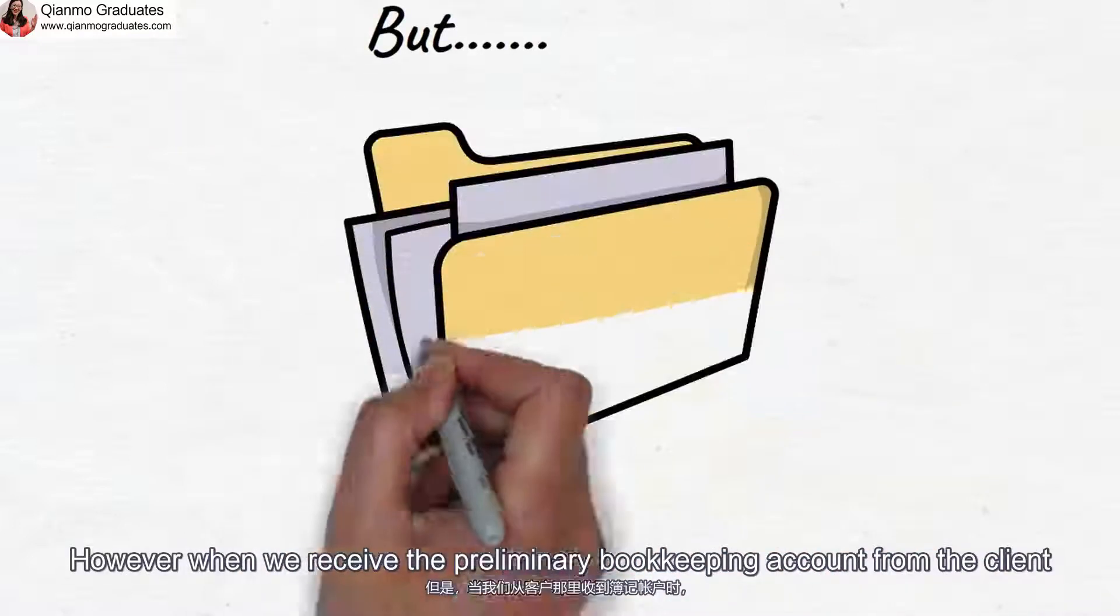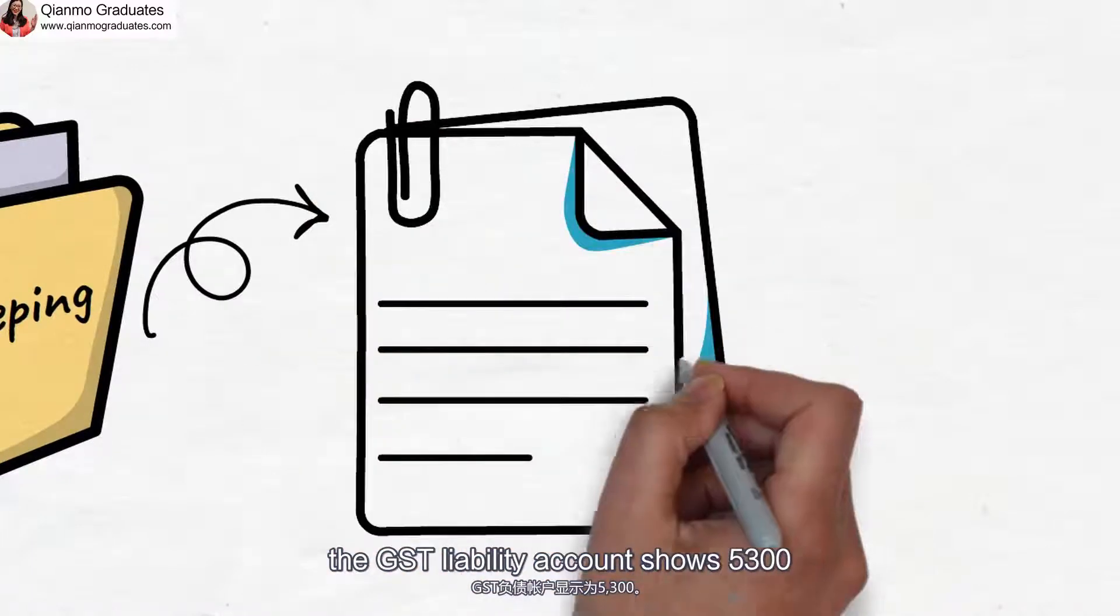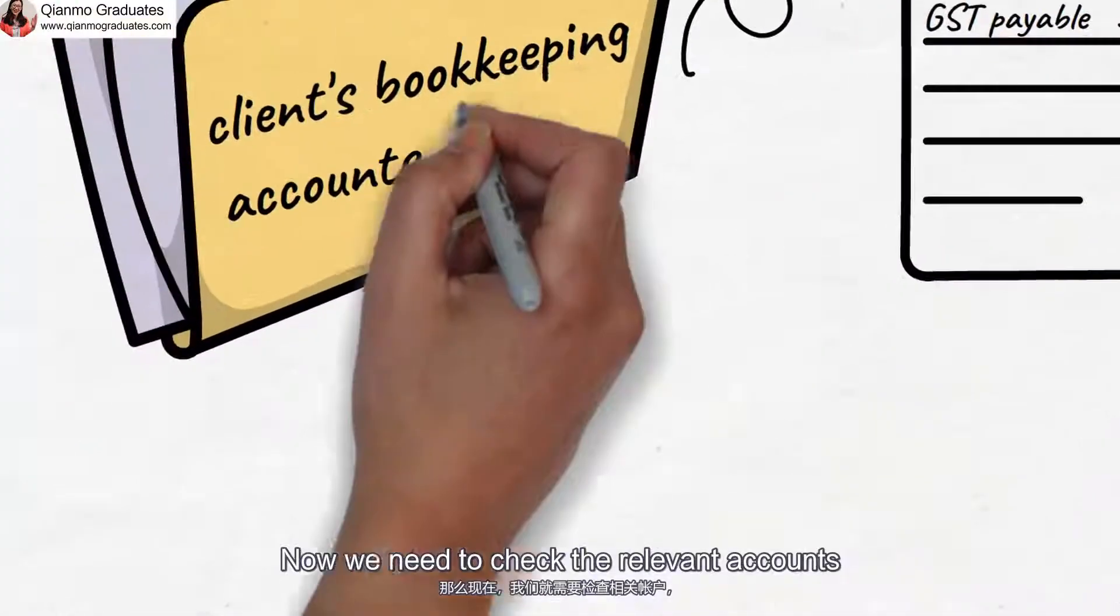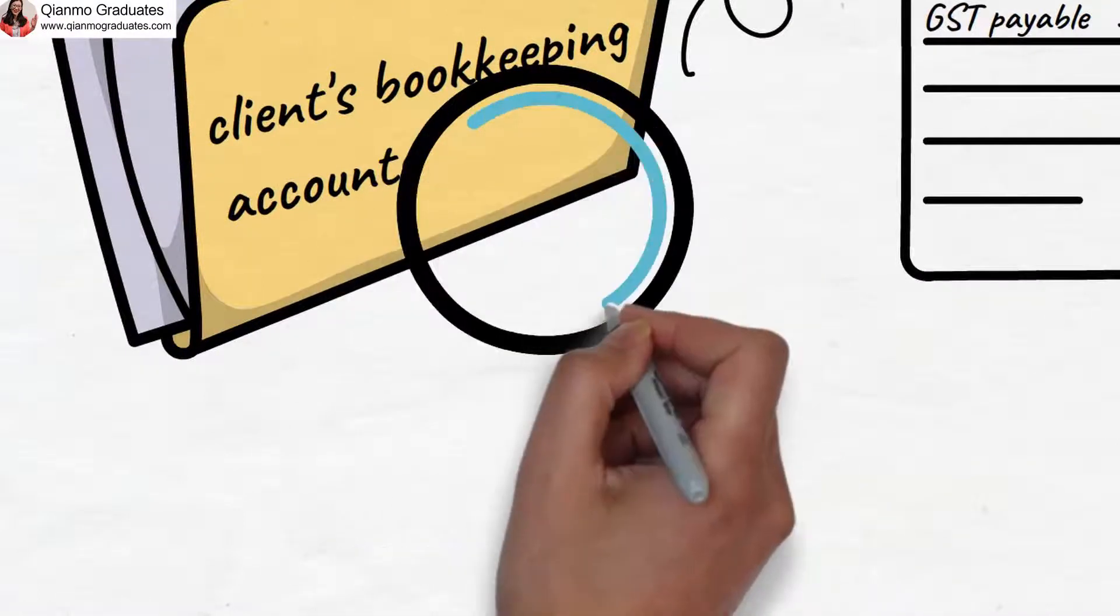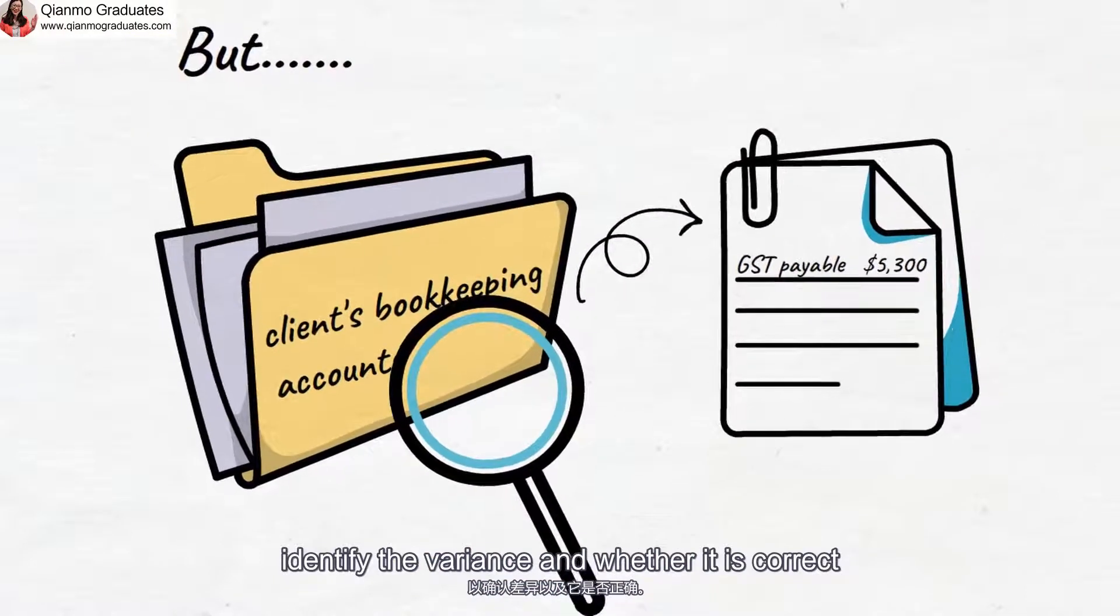However, when we receive the preliminary bookkeeping account from the client, the GST liability account shows $5,300. So now we need to check the relevant accounts and check with the client if necessary to identify the variance and whether it is correct on the bookkeeping account.